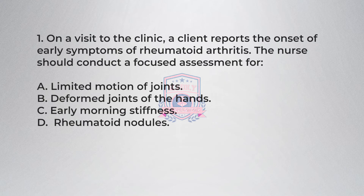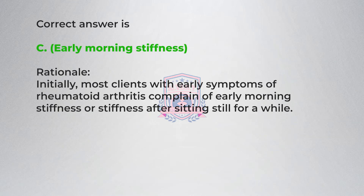Question one: On a visit to the clinic, a client reports the onset of early symptoms of rheumatoid arthritis. The nurse should conduct a focused assessment for: A) limited motion of joints, B) deformed joints of the hands, C) early morning stiffness, D) rheumatoid nodules. Correct answer is C: early morning stiffness.